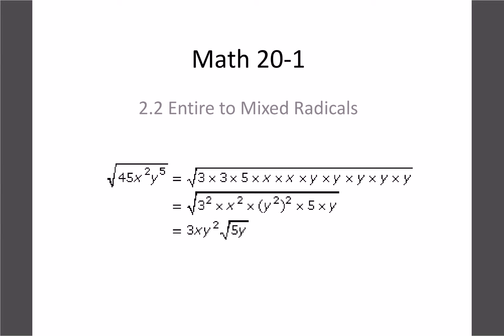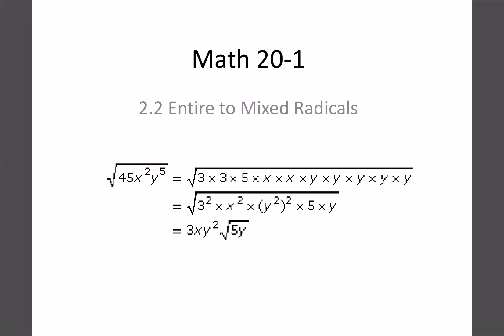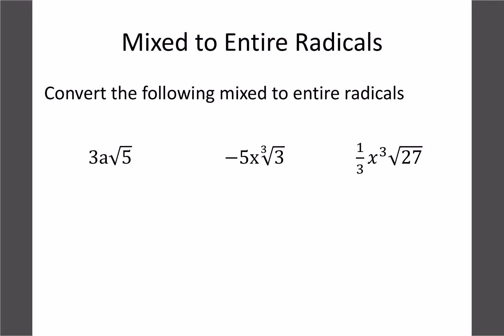Last lesson we converted from mixed to entire radicals. Today we're going the other way around. Given something like the square root of 45x²y⁵, we need to convert it into 3xy²√(5y). It's basically the exact same thing we did yesterday except reversed. Instead of squaring the coefficient, we need to figure out what to break the radicand into — specifically how to get that 9x²y⁴ part inside the radical.